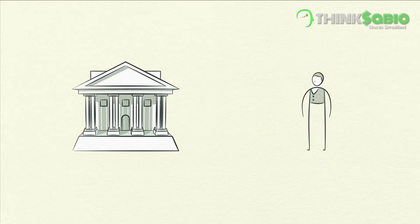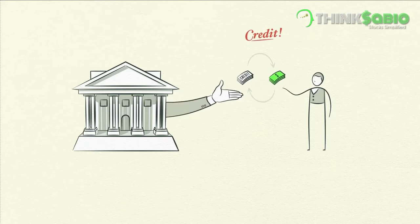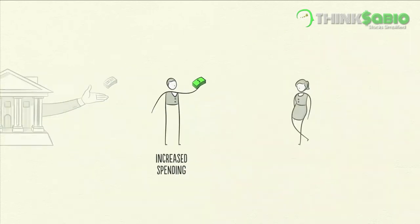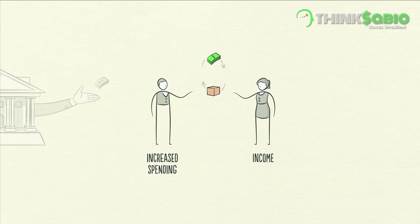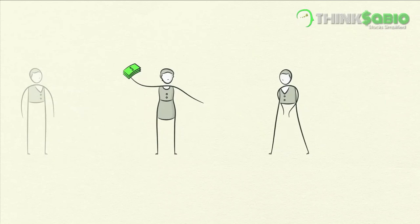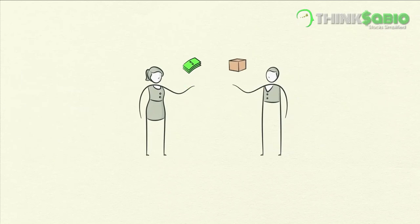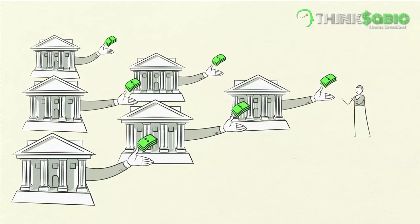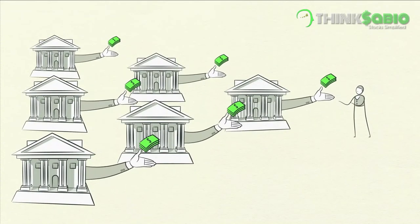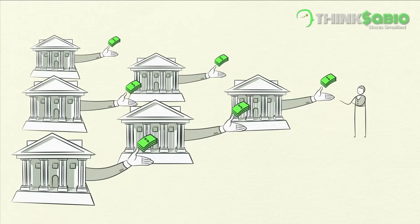Why is credit so important? Because when a borrower receives credit, he is able to increase his spending. And spending drives the economy. This is because one person's spending is another person's income. Every dollar you spend, someone else earns. And every dollar you earn, someone else has spent. So when you spend more, someone else earns more. When someone's income rises, it makes lenders more willing to lend him money, because now he's more worthy of credit.